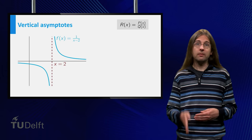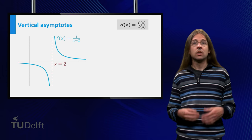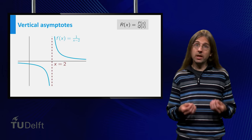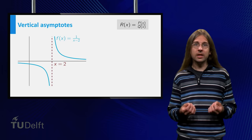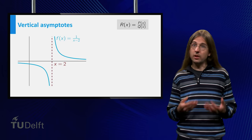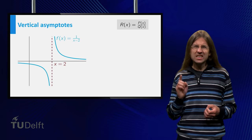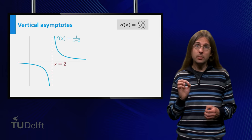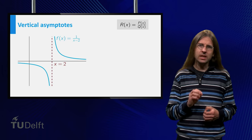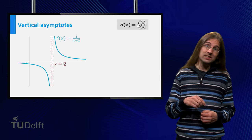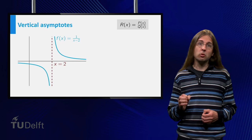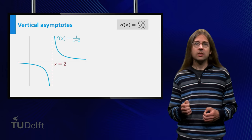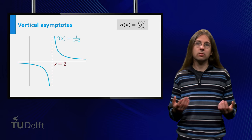A rational function can also have vertical asymptotes. Consider f equals 1 over (x minus 2). For x equal to 2, the denominator becomes 0 and the function is not defined. For x slightly more than 2, this becomes 1 over a small positive number, which is very big. For x slightly less than 2, it is 1 over a small negative number, which is large negative. Therefore, the graph has a vertical asymptote at x equals 2.